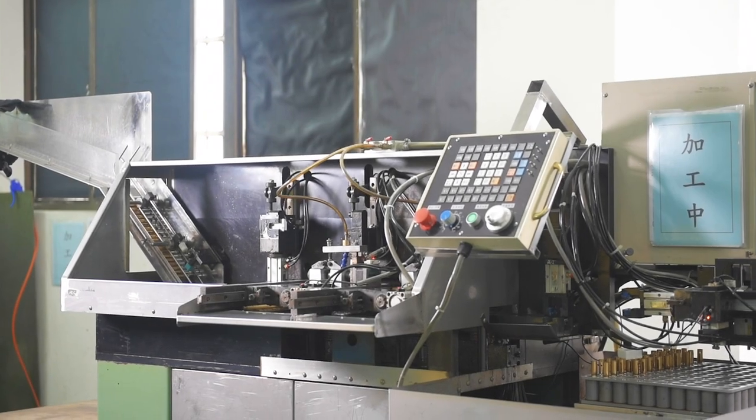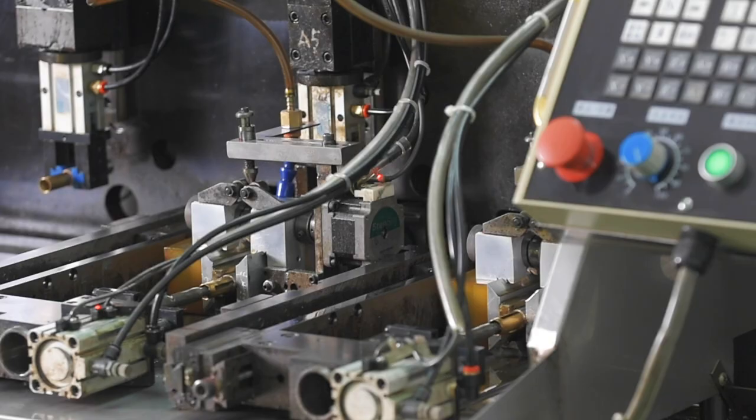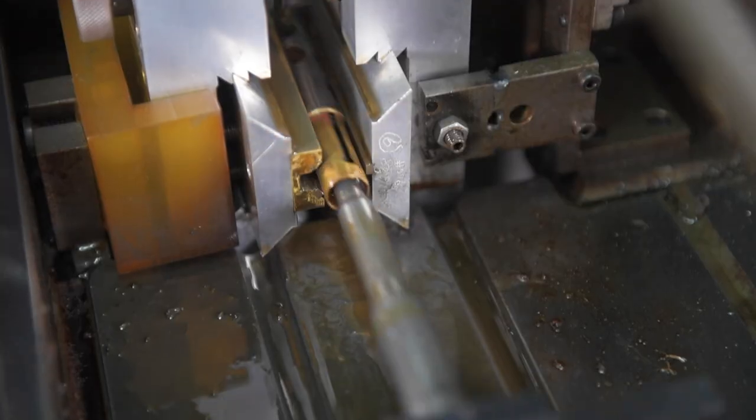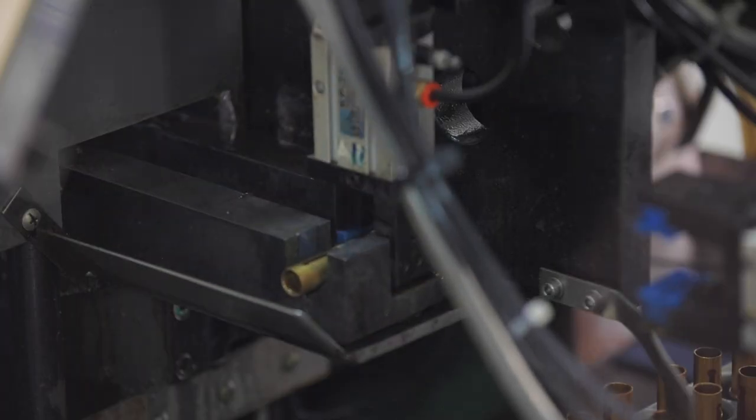Not only do pistons have to be round, but they also need to be incredibly smooth to work well inside the casing. Automatic honing machines help forge the pistons to make sure that the outer surface of the entire tube is as smooth as possible.